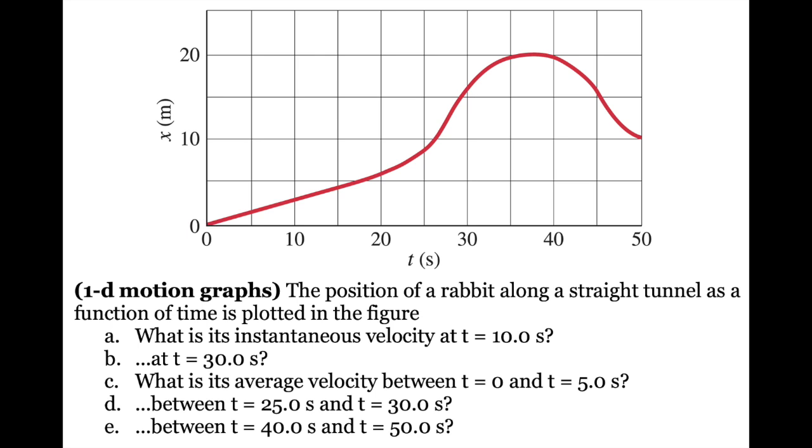What we're supposed to do is figure out both instantaneous velocities and average velocities at various times or time ranges. In part A, we need to find the instantaneous velocity at a time of 10 seconds.